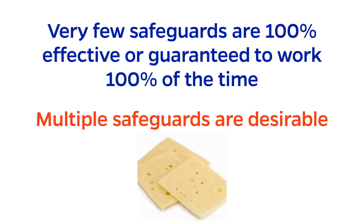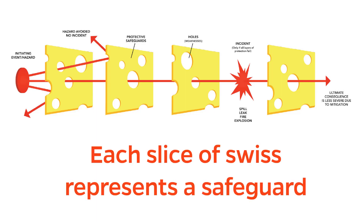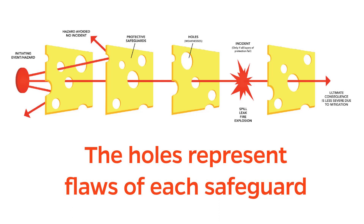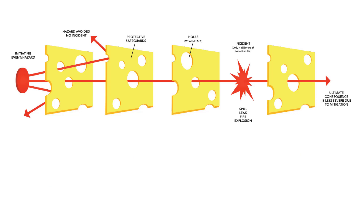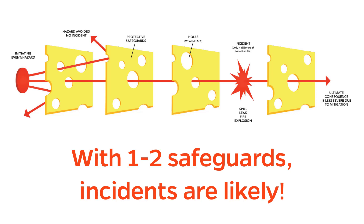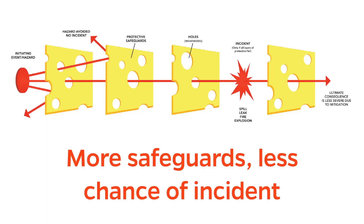Process safety engineers like to conceptualize this by envisioning slices of Swiss cheese, as strange as that sounds. Each slice of Swiss represents a different safeguard, and the holes of the slice represent the defects or flaws of that safeguard. Imagine that a hazard must pass through the holes of the Swiss cheese in order to become an incident. With only one or two safeguards, chances are somewhat high that the holes will align, leaving open the possibility of catastrophe. However, if you stack many slices of Swiss, the likelihood of an incident becomes much lower.